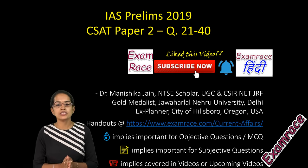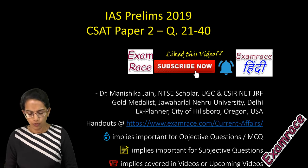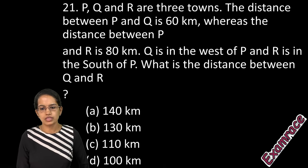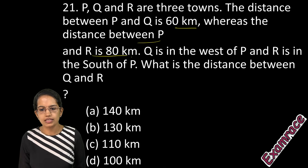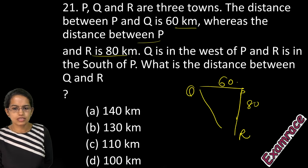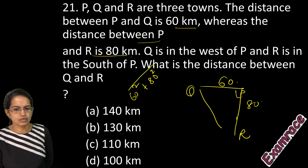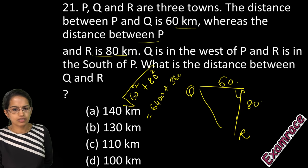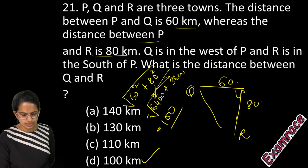Welcome, let's start with the second set for the CSET Paper 2, questions 21 to 40. The first question talks about three towns: P and Q are 60 km away, and P and R are 80 km away. Q is west of P (60 km) and R is south of P (80 km). To find the distance between R and Q, we apply Pythagoras: √(60² + 80²) = √(3600 + 6400) = √10000 = 100 km.